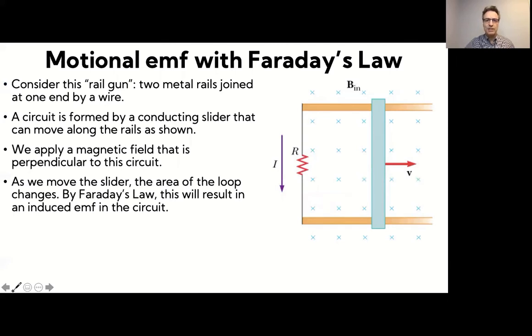So here's the situation that we're considering. Supposedly we have these two metal rails here indicated in yellow. So they're metal rails connected by a wire on this side. And we're going to close that circuit, complete that circuit by adding this conducting slider here. And so that will close the circuit so a current can flow in the circuit. And we apply a magnetic field perpendicular to the surface circuit. So it's pointing into the page right here.